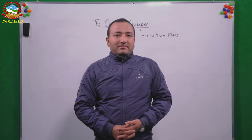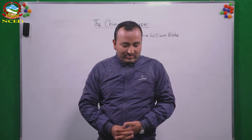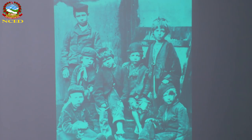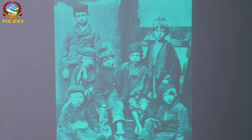Before we begin the poem, we have one picture in the book on page 145. You can see the picture on the screen — the same picture that is given in your book. What do you see in the picture? There are some boys. And what do they look like? Are they happy or sad? I guess you can understand by the expression of those boys. They look, in fact, unhappy. They have dismal faces, sad faces.